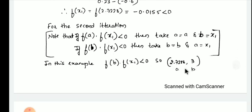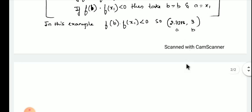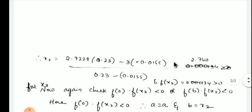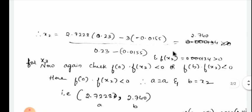For the next iteration, this is your new a and this is your new b. Find f(a) and f(b), then substituting in the formula and simplifying, you get x2. Find f(x2) by replacing x2 in the given equation. Whatever the answer of x2 is, you have to substitute that value.